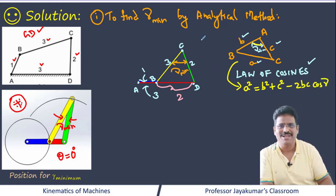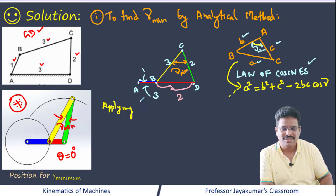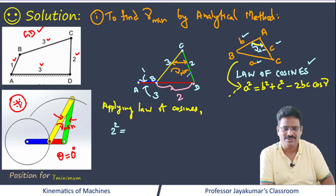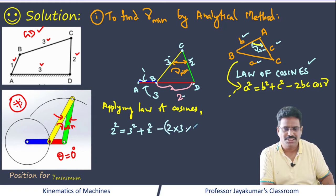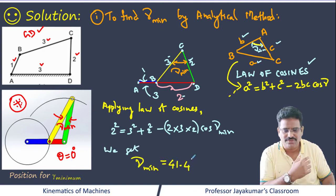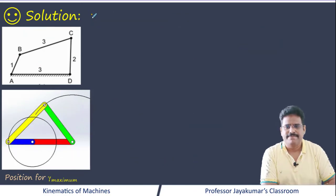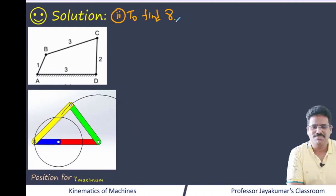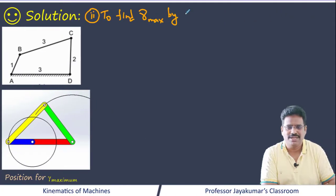Applying the law of cosines: 2² = 3² + 2² − 2×3×2×cos(gamma minimum). On simplification, we get gamma minimum equal to 41.4 degrees. Now we can find the maximum transmission angle by the analytical method. We know that the transmission angle will be maximum when the crank angle is at 180 degrees.